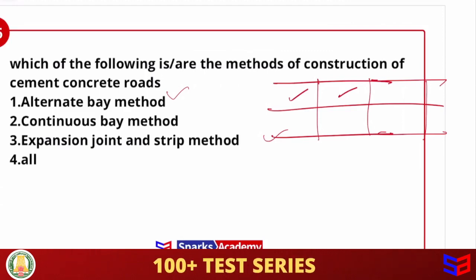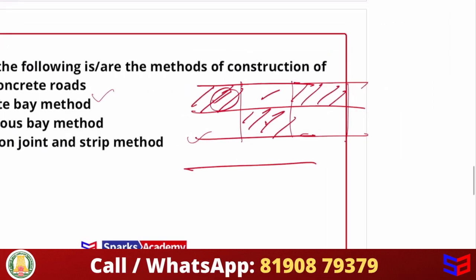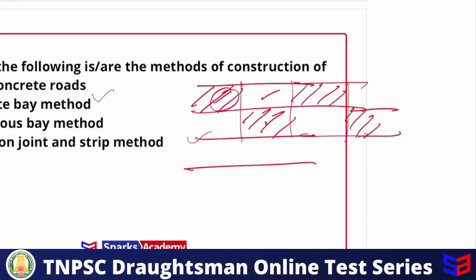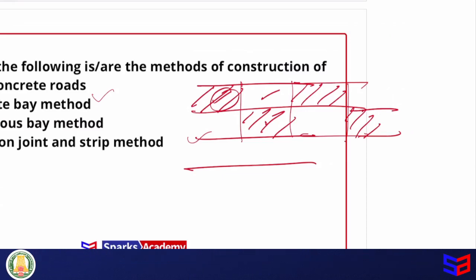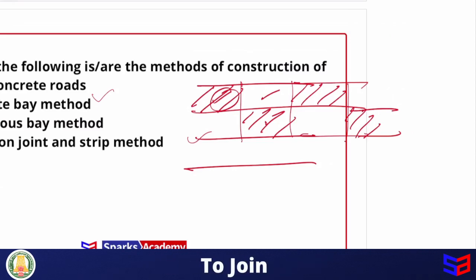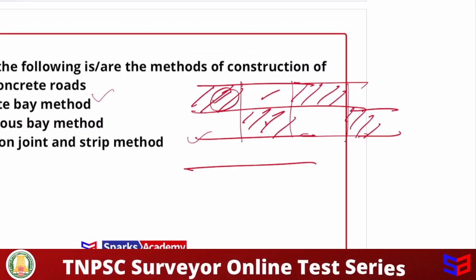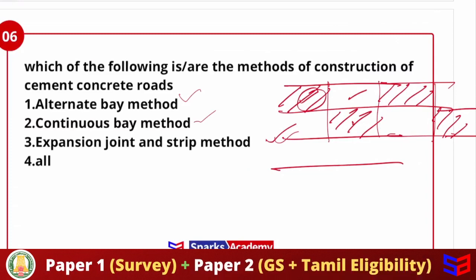In double-lane construction using the Alternate Bay Method, the even side is constructed first, then the odd side, in alternating portions. This method is useful on roads where traffic cannot be diverted — people can use the alternate bays while the other side dries. Along with Alternate Bay Method, Continuous Bay Method and Expansion and Strip Method are also used in cement concrete construction, so the answer is all.